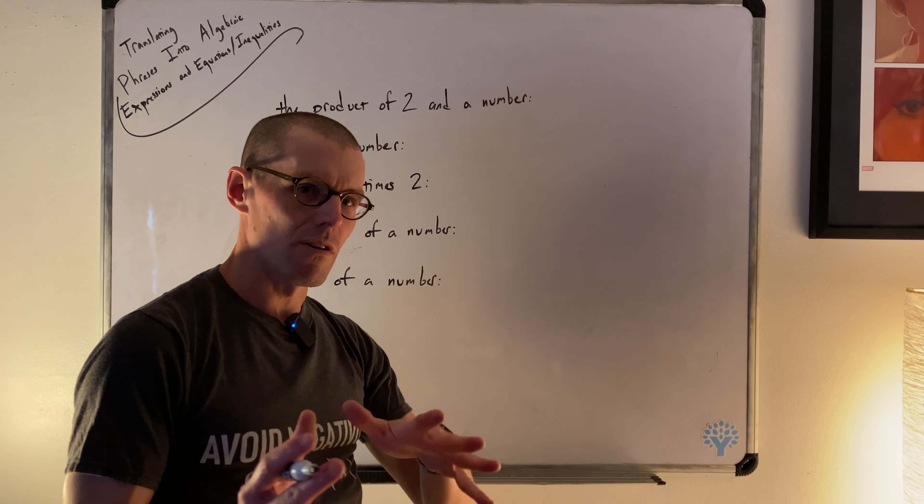Twice a number: 'twice' is very direct — it means two times. Twice a number is two times that number, so two times x, or 2x. That's twice a number.